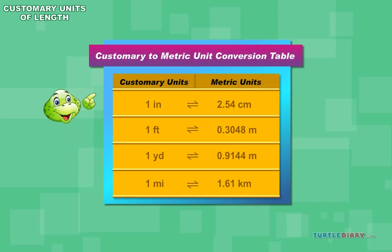Here is the conversion table from customary to metric units. 1 inch equals 2.54 centimeters. 1 foot equals 0.3048 meters. 1 yard equals 0.9144 meters. 1 mile equals 1.61 kilometers.